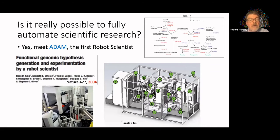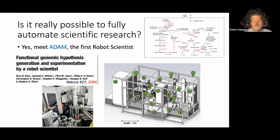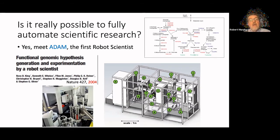The first example of this kind of system was built a number of years ago. It combined laboratory automation with machine learning to do continuous, efficient experimentation. The idea was to avoid doing all possible experiments and instead do only the most informative ones for building a model. ADAM worked in the space of understanding which genes code for which enzymes in yeast cells — a straightforward problem but one involving many genes and many enzymes.